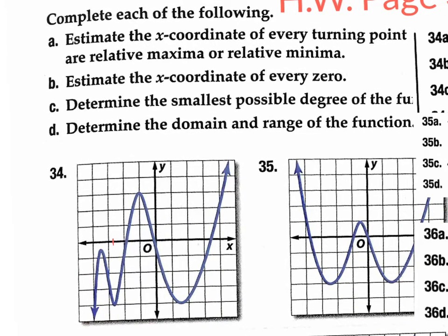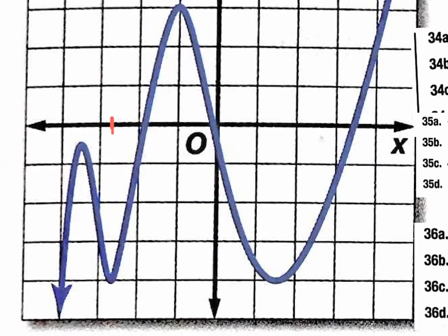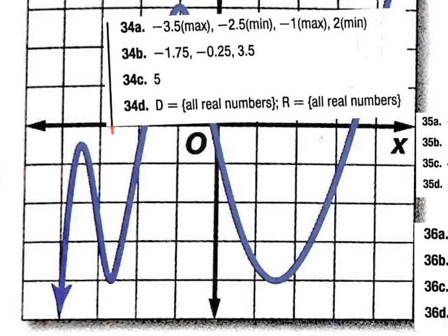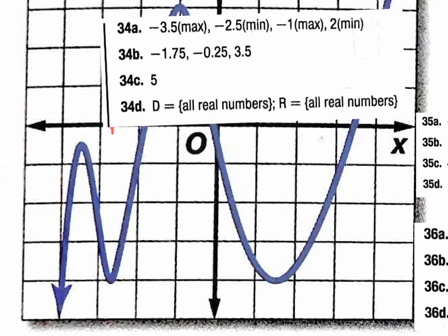Part B: estimate the x-coordinate of every zero. What's a zero? The answers. So estimate the answers — where does it cross the x-axis? We'd say approximately negative 1.9, negative 0.1, and 3.3 or 3.4. The book's answers are negative 1.75, 0.25, and 3.5. Those are all reasonable estimates — they're just approximations.